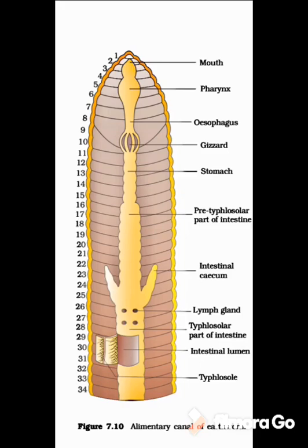The stomach leads into the intestine, which starts from the 15th segment up to the last segment. At the 26th segment, the intestine gives a small conical upwardly projected structure called the intestinal caeca, whose secretion helps in digestion of food. From the 26th segment onwards, the intestine is associated with an internal median fold of the dorsal wall called typhlosole, which increases the surface area for more absorption of digested food. Two pairs of lymph glands are also present in segments 26 and 27.